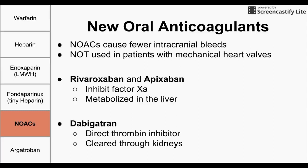We also have dabigatran, which directly inhibits thrombin. Unlike unfractionated heparin, which had an indirect effect on thrombin, dabigatran is a direct thrombin inhibitor, and dabigatran is cleared through the kidneys.